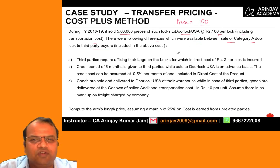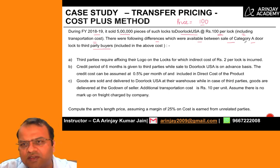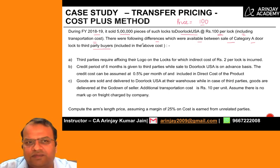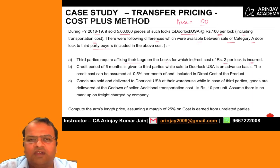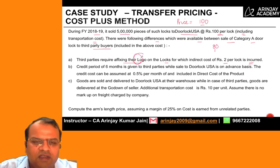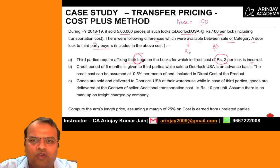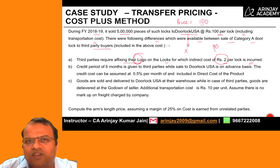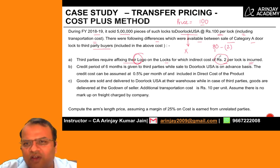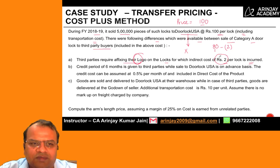There were differences between the sale of Category A door locks to third-party buyers. Third parties require affixing their logo on the locks, for which an indirect cost of 2 rupees per lock is incurred. However, this logo is not required for Door Lock USA. To make the two prices comparable, I need to remove that cost, so I will remove 2 rupees from the cost of 80.